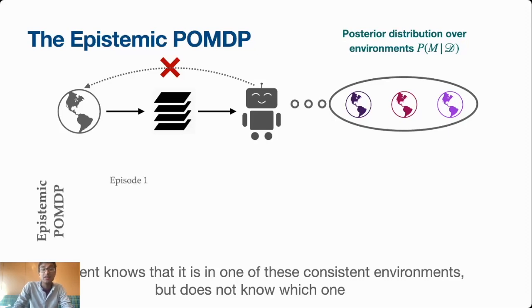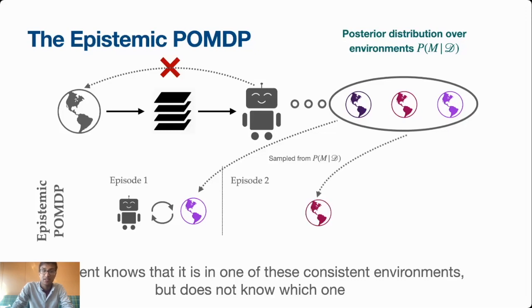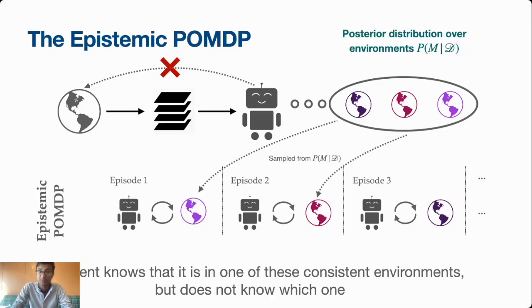We can formalize this using the epistemic POMDP, which captures the intuition that the agent knows that it's in one of these consistent environments but doesn't know which one, yet it would like to do well and receive high return. What's going to happen is that each episode, a new environment from this posterior distribution is going to be sampled, and the agent is asked to interact with it. Notably, the agent doesn't know which environment it's being asked to interact with. Once the episode ends, we're going to do it again, sample a new environment and rinse and repeat the process. So the agent needs to come up with a strategy that's going to work well across all of these different environments.